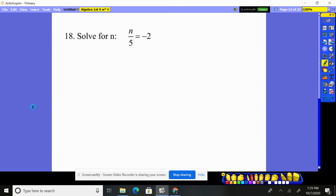All right, how do I get rid of dividing by 5? How do you undo dividing by 5? You multiply by 5, so we multiply both sides by 5. 5s would cancel. So you're left with n equals negative 10. And it makes sense. Negative 10 divided by 5 equals negative 2. I know I'm correct.